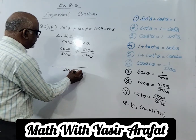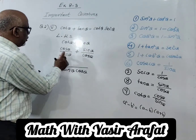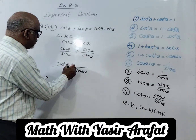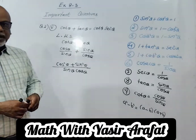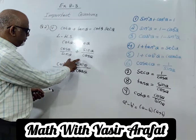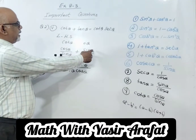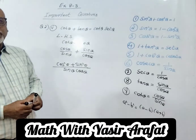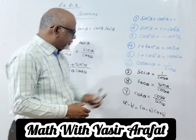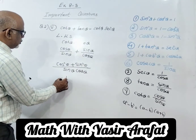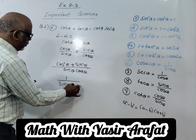Now take out the LCM, which is sin θ cos θ. So cos θ multiplied by cos θ gives cos²θ, and sin θ multiplied by sin θ gives sin²θ. Taking the LCM between these two fractions, sin θ cos θ will be the LCM. This cos multiplies by this cos giving cos²θ, and sin θ times sin θ giving sin²θ. Now we focus on formula number 1: sin²θ + cos²θ = 1, so we put this formula here, giving 1 over sin θ cos θ.